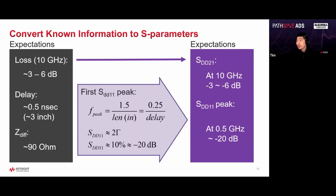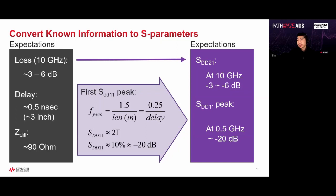To answer Q&A: the stack up file will be shared later. Loss metric is different from dissipation factor — dissipation factor only contributes to dielectric loss, while the loss metric combines conductor loss and dielectric loss into one universal metric. For files to import into ADS, we can import ODB++ or Gerber, but ODB++ and BRD files give you all the information.